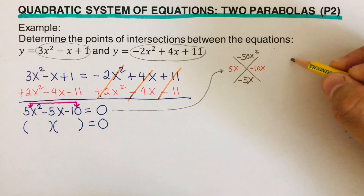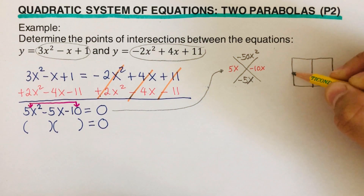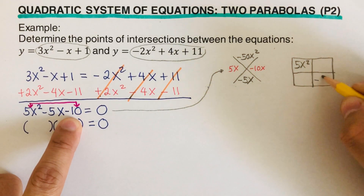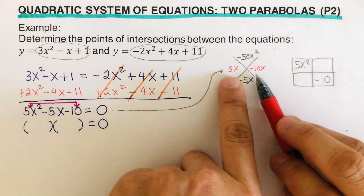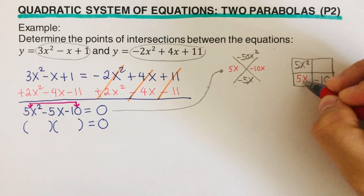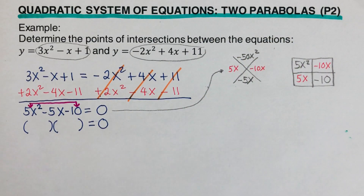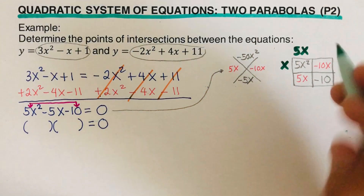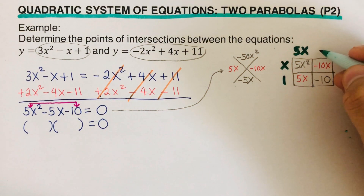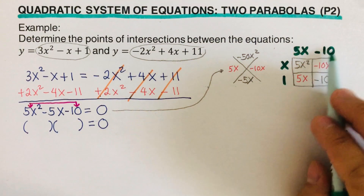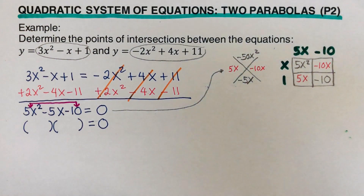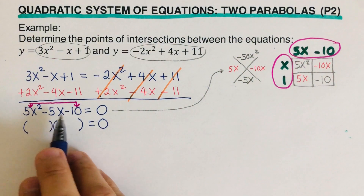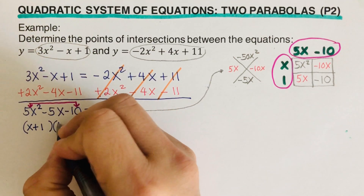Now we draw the two-by-two box. We place the first term 5x squared and the last term negative 10 in the box, then write the diamond factors 5x and negative 10x in the remaining cells. Reading the factors from the box: the column gives x and 1, and the row gives 5x and negative 10, because 5x times 1 is 5x, negative 10 times x is negative 10x, and negative 10 times 1 is negative 10. So the equation factors as (x + 1)(5x minus 10).